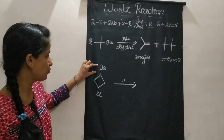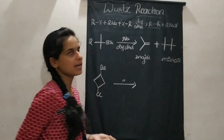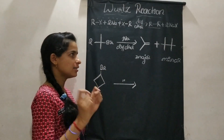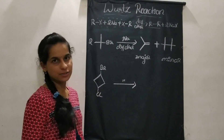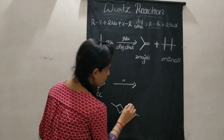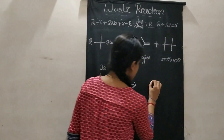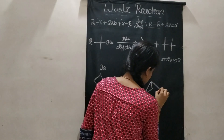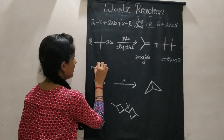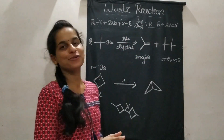Let us take another special example of Wurtz reaction where two halogen atoms are different - for example RCl and RBr. Even when halogen atoms are different, Wurtz reaction is possible. In this special case, instead of a chain formation, intramolecular Wurtz reaction takes place, giving a cyclic product. NaBr and NaCl are also formed as byproducts. This is a special example of Wurtz reaction.